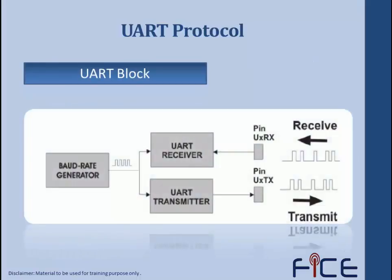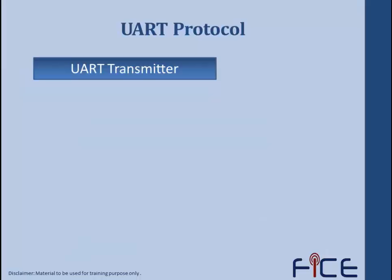The UART block contains a transmitter, a receiver, and a baud rate generator. The UART transmitter is responsible for transmitting data in a data frame format, while the receiver receives the transmitted data. The baud rate generator is an important part of UART as it maintains synchronization between the receiver and the transmitter, because both operate on two different clocks.